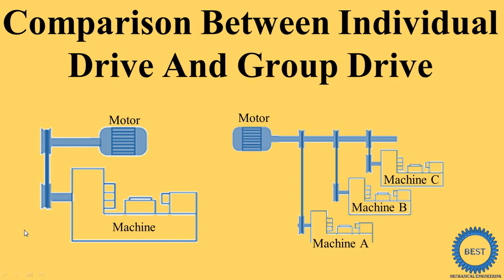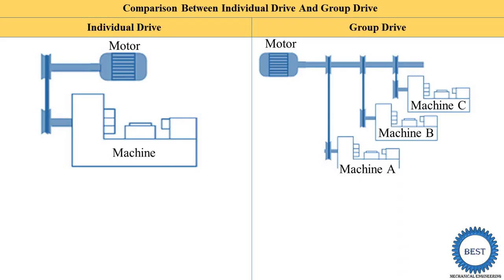In this video we discuss comparison between individual drive and group drives. In the last video we already discussed the basics about individual drives and group drives. On the left side we mention the points of individual drive, and on the right side we mention the points of group drives. In an individual drive, every machine has a separate electric motor. In a group drive, a number of machines are run using one heavy motor.